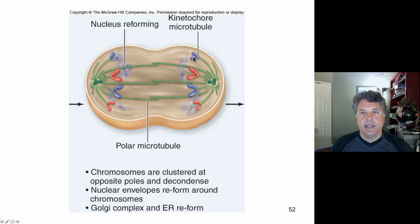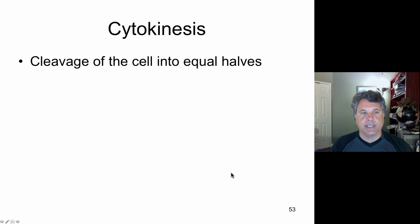Here's a schematic of this. In telophase the chromosomes are reaching the poles, they are beginning to decondense. Nuclear envelopes are going to form around these. And the Golgi and ER also reform. The endoplasmic reticulum and Golgi complex are beginning to reform at the poles of the cells.